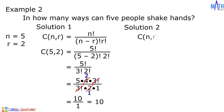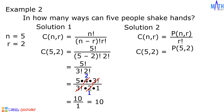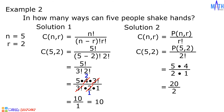Solution number 2: using this formula, the combination of 5 taken 2 at a time is equal to the permutation of 5 taken 2 at a time over 2 factorial. It is equal to 5 times 4 over 2 times 1. 5 times 4 is 20, and 2 times 1 is 2. 20 divided by 2 is equal to 10.